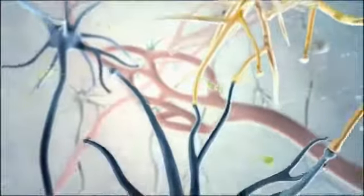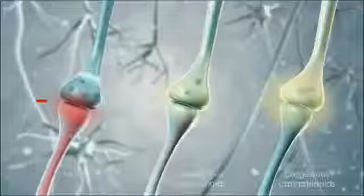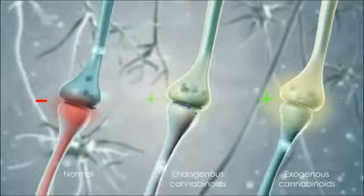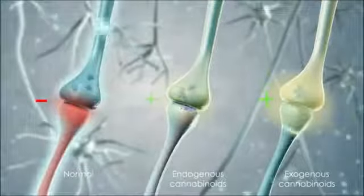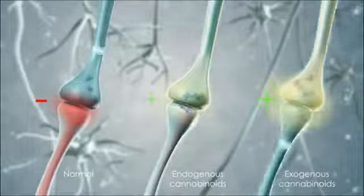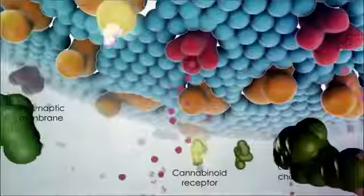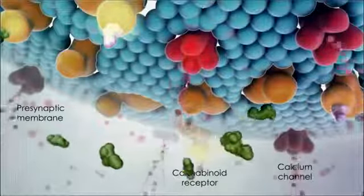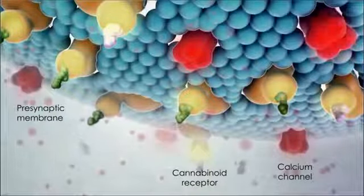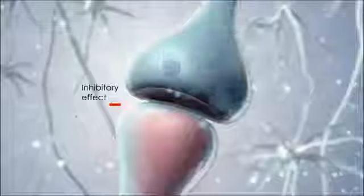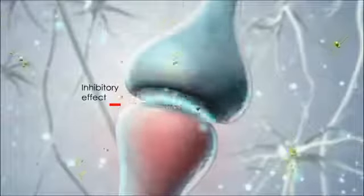Exogenous cannabinoids exert their modulatory effects upon the abundant cannabinoid receptors distributed throughout the CNS. The effects of cannabinoids may be illustrated by comparing three neuronal synapses showing normal pain transmission, the influence of endogenous cannabinoids, and the influence of exogenous cannabinoid administration. Exogenous cannabinoids from the bloodstream bind to cannabinoid receptors on the presynaptic neuron and mimic the endogenous synaptic modulatory effect by decreasing influx of calcium ions, thereby modulating pain and other neural processes.